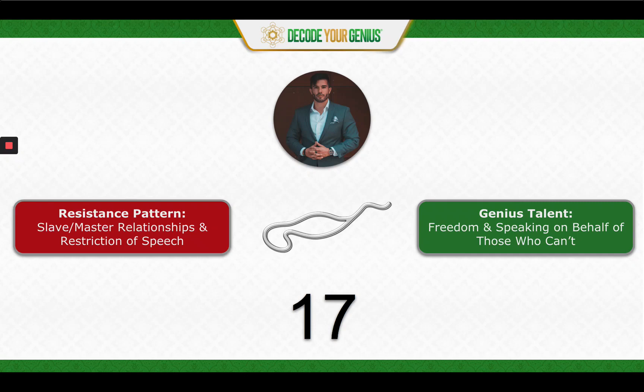All right, let's start with the resistance pattern. This is the slave/master relationships and restriction of speech. It's relationships where one person is playing the role of the slave and another person is playing the role of the master. With this resistance pattern, you could be on either side. Oftentimes it's the slave, but it can also be the master as well.